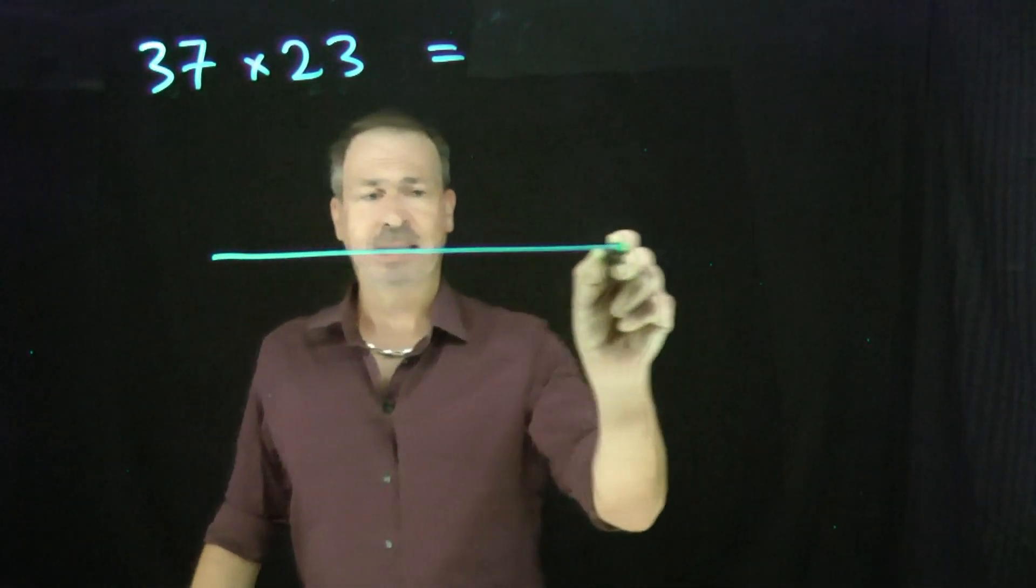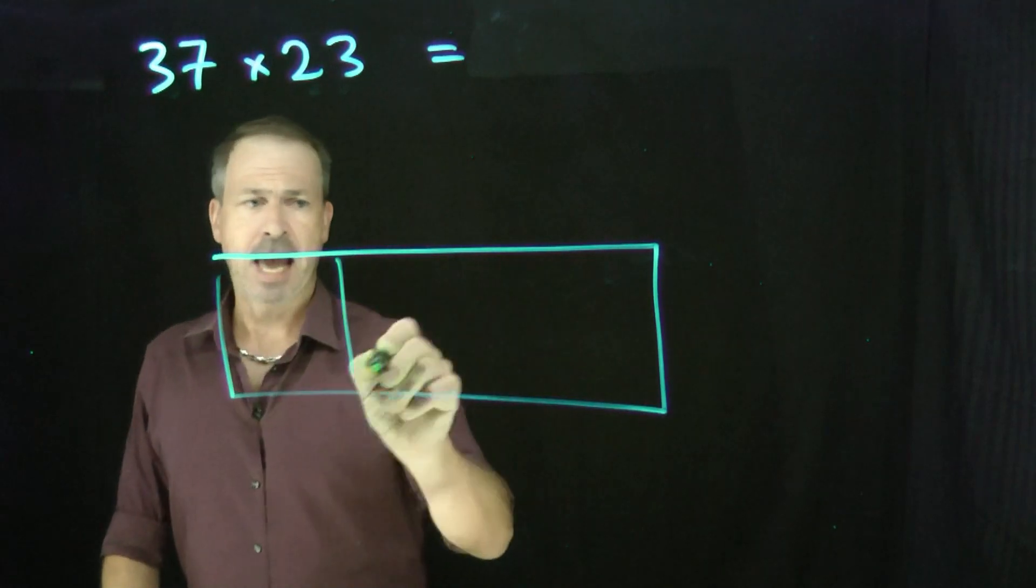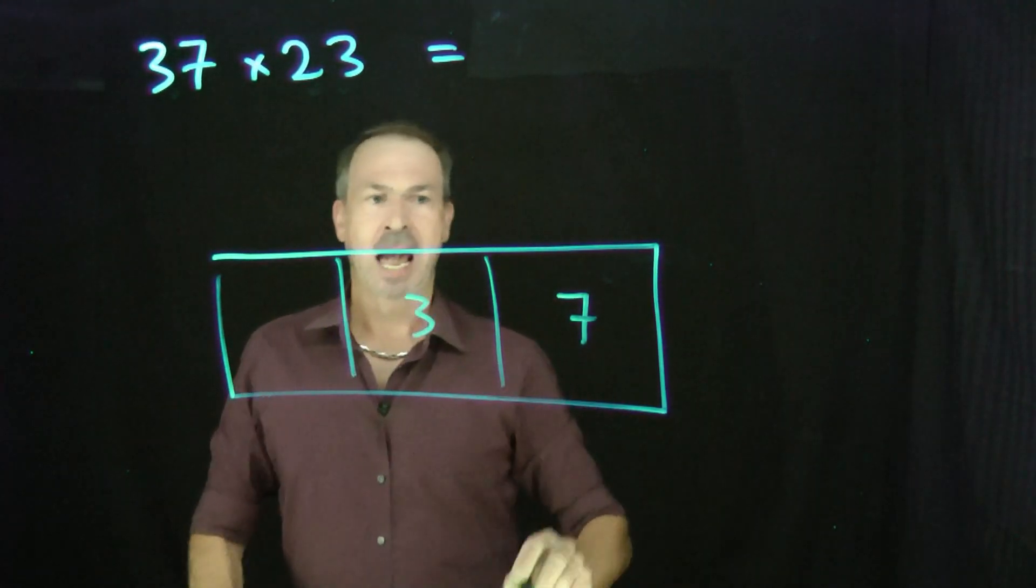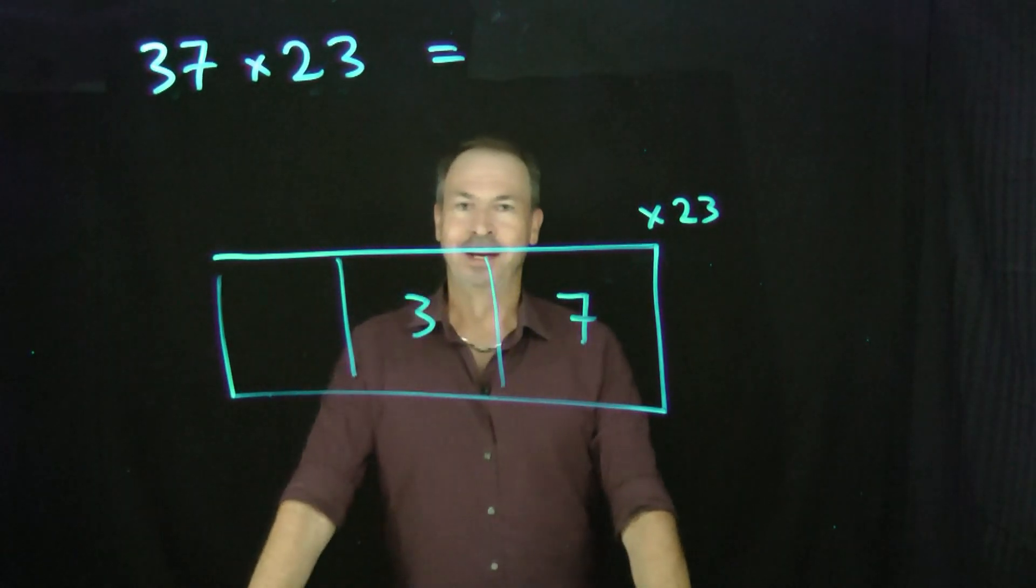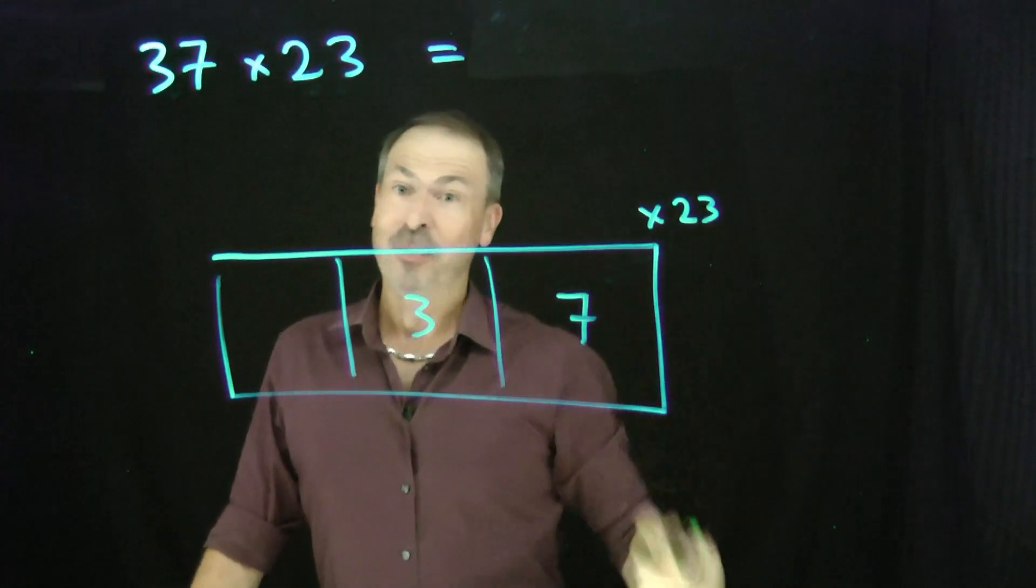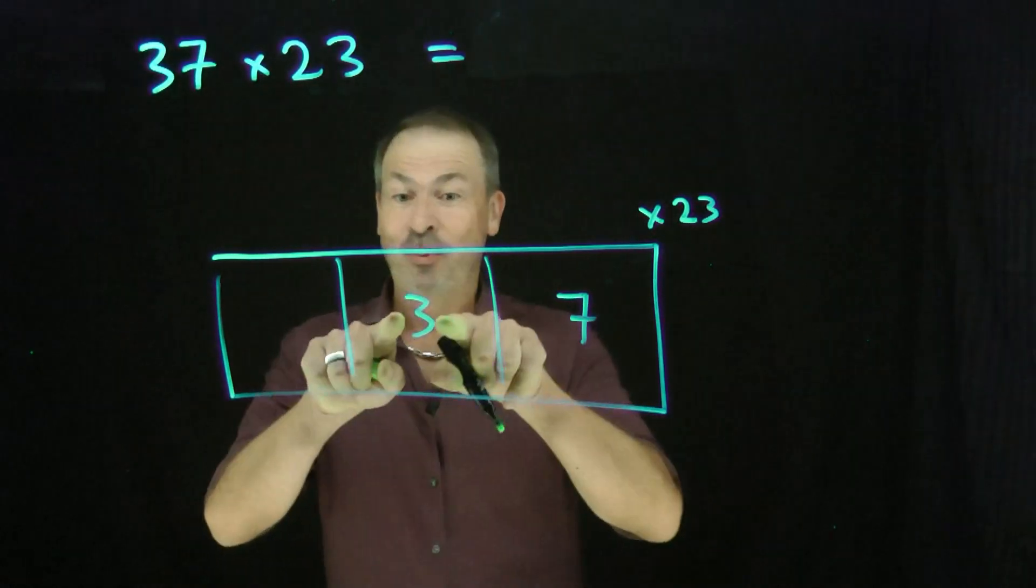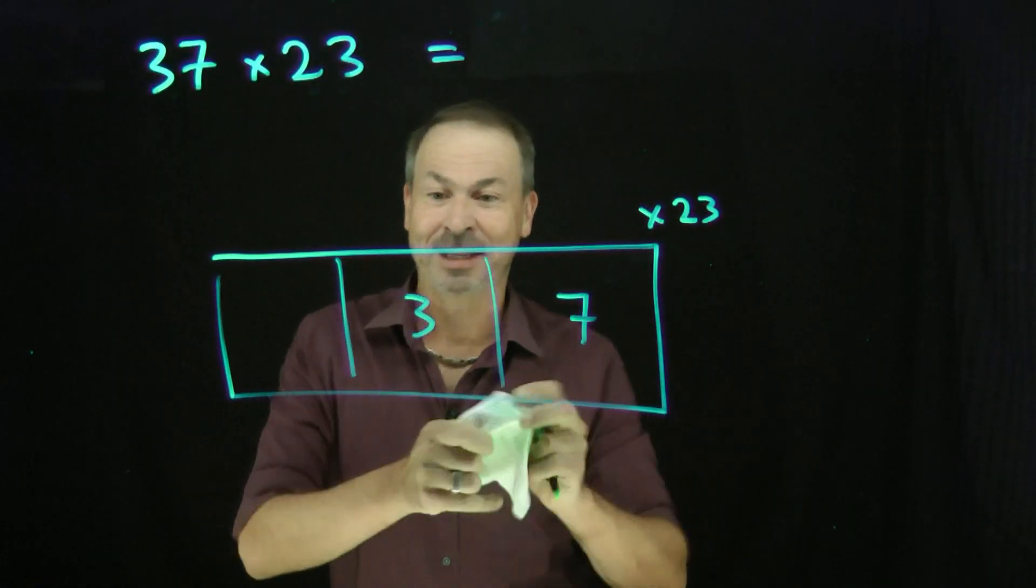Let me draw a picture of 37. So here's a 10-1 machine. And I want 3 tens and 7 ones. And I'll scale all that by a factor of 23. Alright, so this assumes I know my multiples of 23 very well. So 3 dots here will become, 3 times 23 is 69.